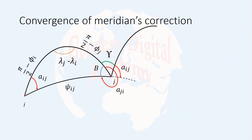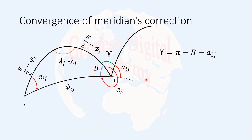So as I explained, this angle gamma is created because of the convergence of meridians. If we can determine this angle, we can directly compute the reverse azimuth. Gamma is equal to pi minus angle B minus the direct azimuth a_ij. This is clear from the figure: from up to here is 180 degrees or pi, and if I subtract angle B and alpha_r_ij from pi, I get gamma. The question is how to compute angle B.